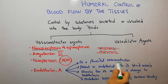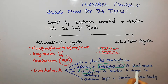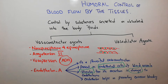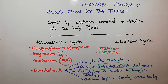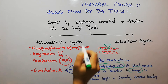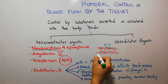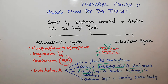Endothelin is present in the endothelial cells of most blood vessels. The stimulus for its secretion is damage to the endothelium — any substance or event that damages the endothelium, such as trauma, chemicals, or excessive pressure on the endothelium, is going to cause secretion of endothelin A.